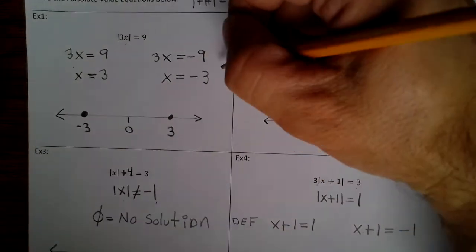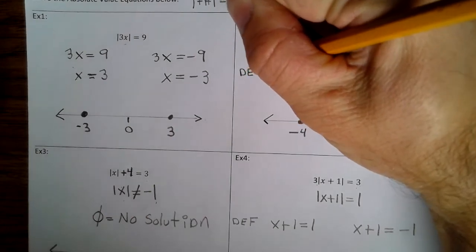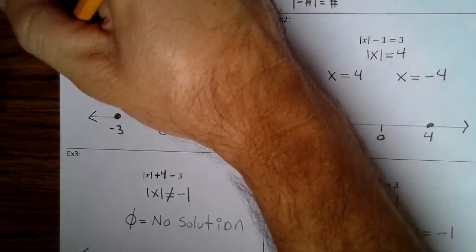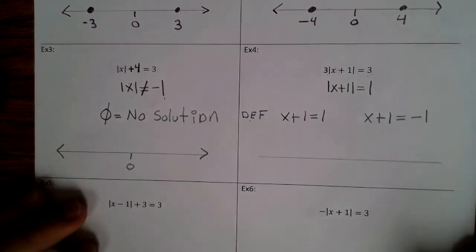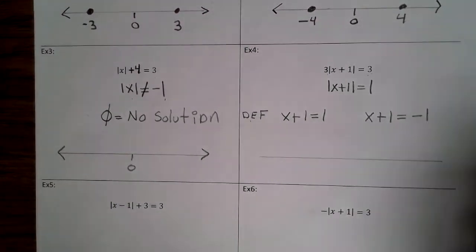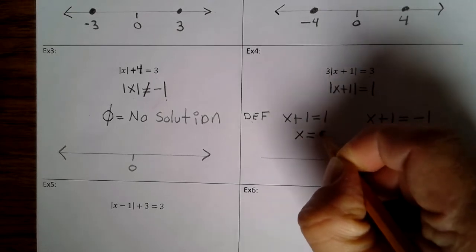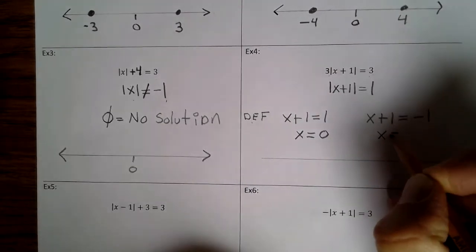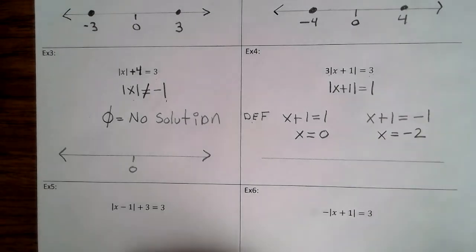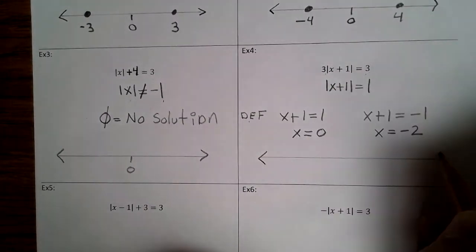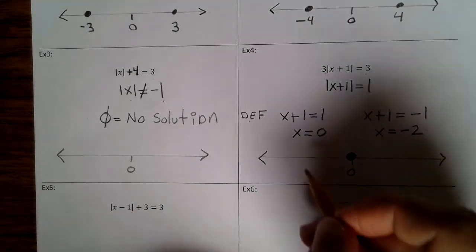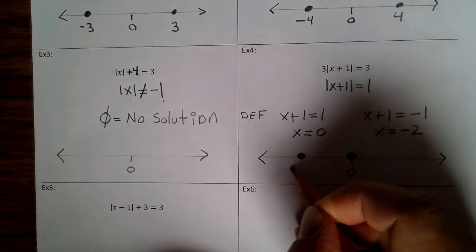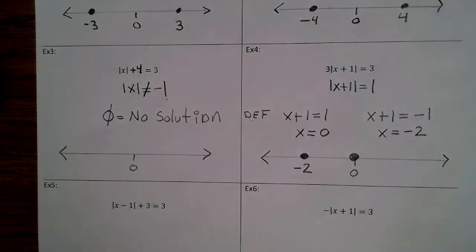If we went back, we could actually put DEF here and here because that's where you've applied the definition. So let's finish example 4. We're going to subtract 1 from both sides: x equals 0. Subtract 1 from both sides: x equals negative 2. So we graph our solutions — a dot at 0 and a dot at negative 2. Go ahead and finish up example 4.